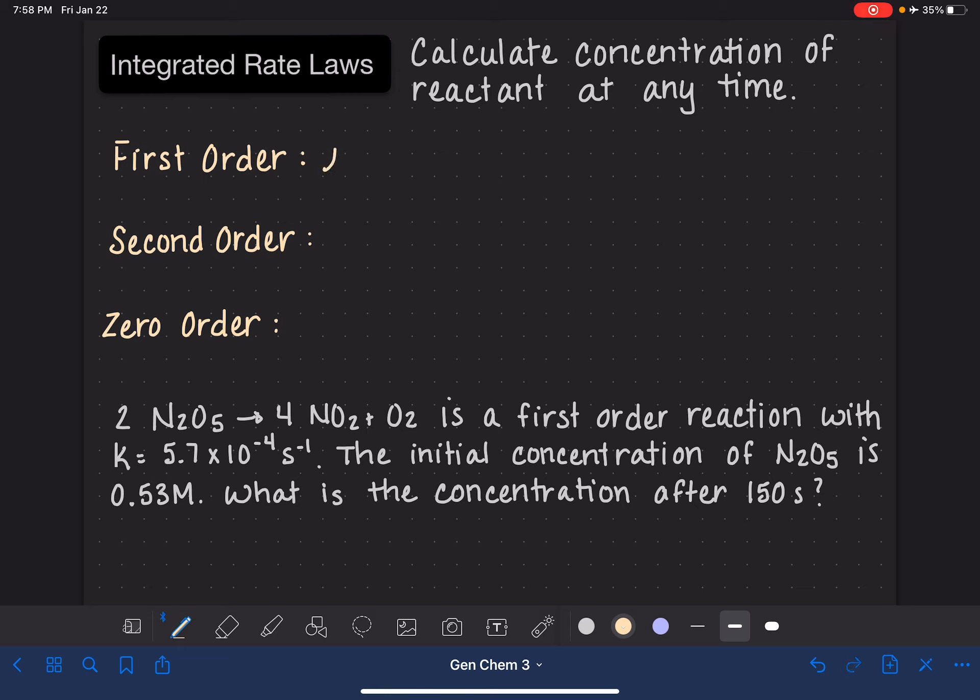For a first order reaction, the integrated rate law is the natural log of the concentration of reactant A at time T. And I'm going to write all these symbols down once I get the equations written down. It is equal to the negative rate constant times time T plus the natural log of the concentration of A at the beginning of the reaction.